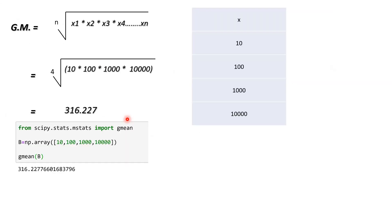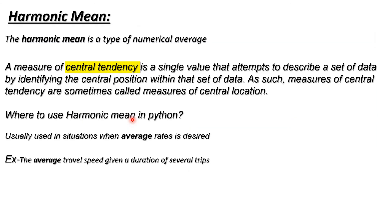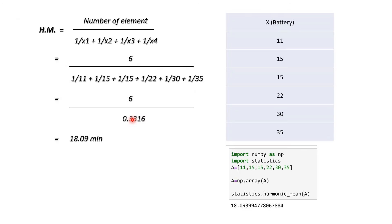So both geometric mean and harmonic mean are used to find the central tendency in your data set, but the way to calculate is different. Use geometric mean when your data is rising exponentially. Use harmonic mean when you need to calculate the average rate of a data set. In the next tutorial we'll see more topics in statistics. If you like this video, please like and subscribe to my channel.